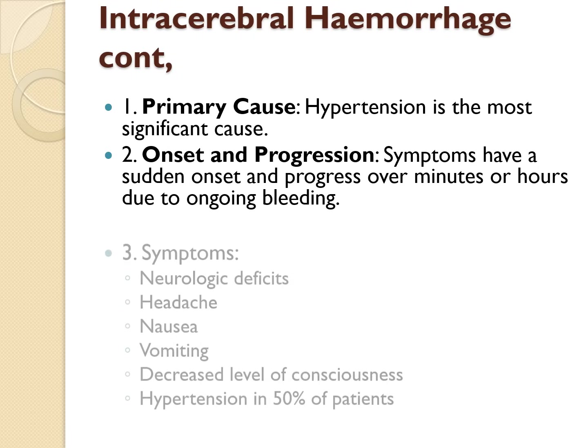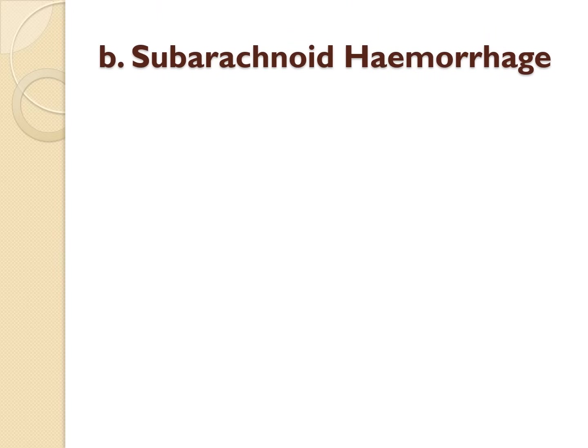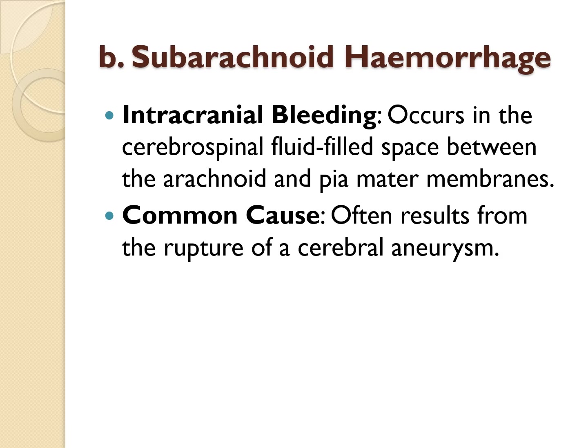Symptoms of intracerebral hemorrhage include neurological deficits, headache, nausea, vomiting, decreased level of consciousness, and hypertension in 50% of patients. The other type of hemorrhagic stroke is subarachnoid hemorrhage, which occurs when there is intracranial bleeding into the cerebrospinal fluid-filled space between the arachnoid and pia mater membranes. It is commonly caused by rupture of a cerebral aneurysm.